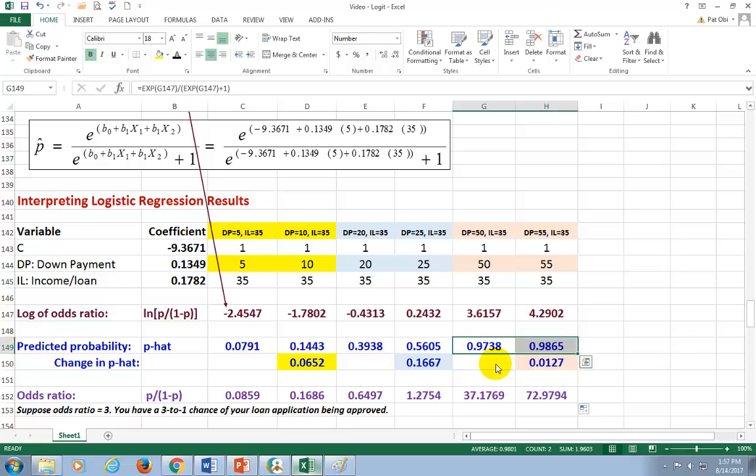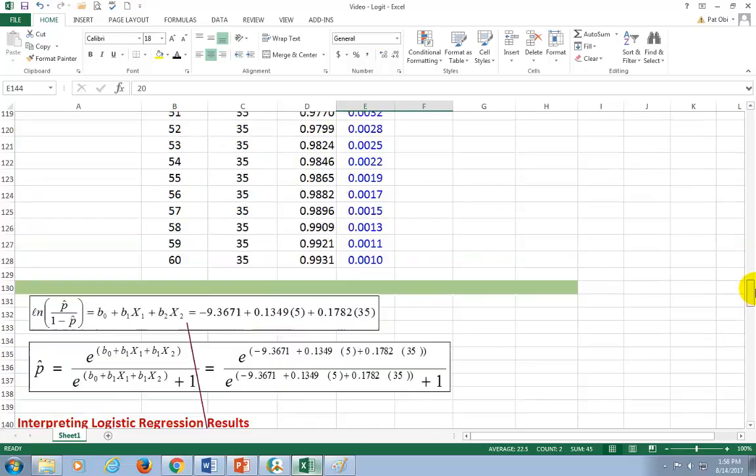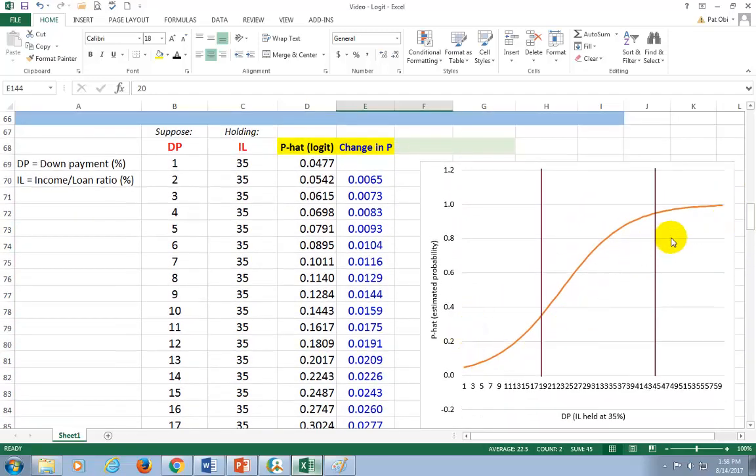So, then, therefore, by increasing down payment by 5% does not have the same effect if the initial down payment is either very low or very high, as in this case, compared to what it would be somewhere in the middle. Now, as the logistic model plot here shows, most of the change occurs in the middle, as you can see right here.